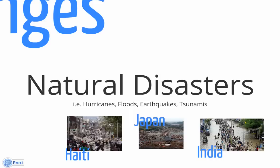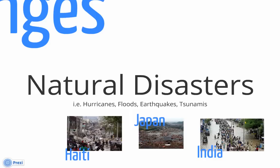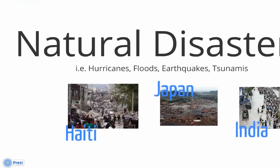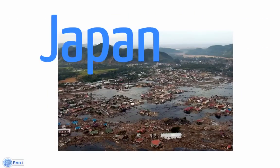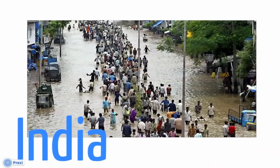The fortunate thing about natural disasters is that individuals, governments, and humanitarian organizations provide aid to regions suffering. We had the earthquake in Haiti, one in Japan, and with that earthquake there was a tsunami that washed water up on the land and pulled people out into the ocean. Similar things have happened in India.